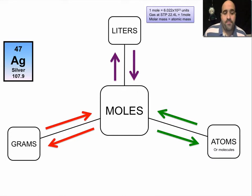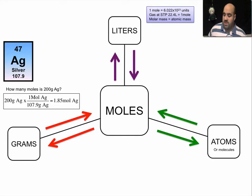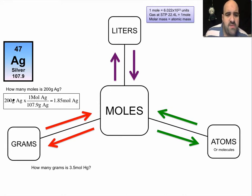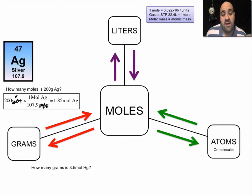Silver is 107.9 grams per mole. How many moles is 200 grams of silver? We start with 200 grams of Ag times a blank fraction. Grams of Ag goes down here, and we want moles on top. The relationship between moles and grams for silver: one mole of silver is 107.9 grams. Set the problem up, multiply across, divide by the bottom — these units cancel. Whatever units are up here have to go down there. When you do that, you get 1.85 moles of Ag.